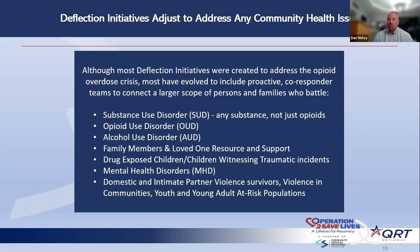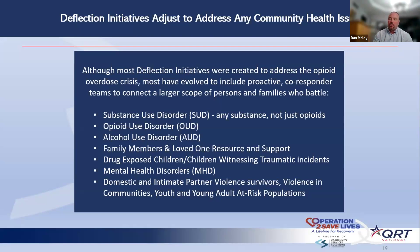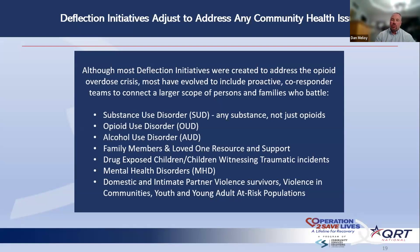Drug-exposed children, the witnessing of traumatic incidents — you heard from the situation table that trauma is the number-one risk factor presenting in communities. Mental health disorders, domestic violence, intimate partner violence, violence in communities, young people, at-risk adult populations — these are all now part of the conversations that maybe weren't part of the conversation 10 years ago. We're allowing ourselves, because of our partnerships, to sit in a room, talk about what's important, and listen to each other: 'I'm not the expert in this, but I'm here to help you — just let me know how I can be helpful.' That's the changing dynamic happening within law enforcement, fire and EMS, public health, and community relationships. We're listening and working together more than we ever did before.